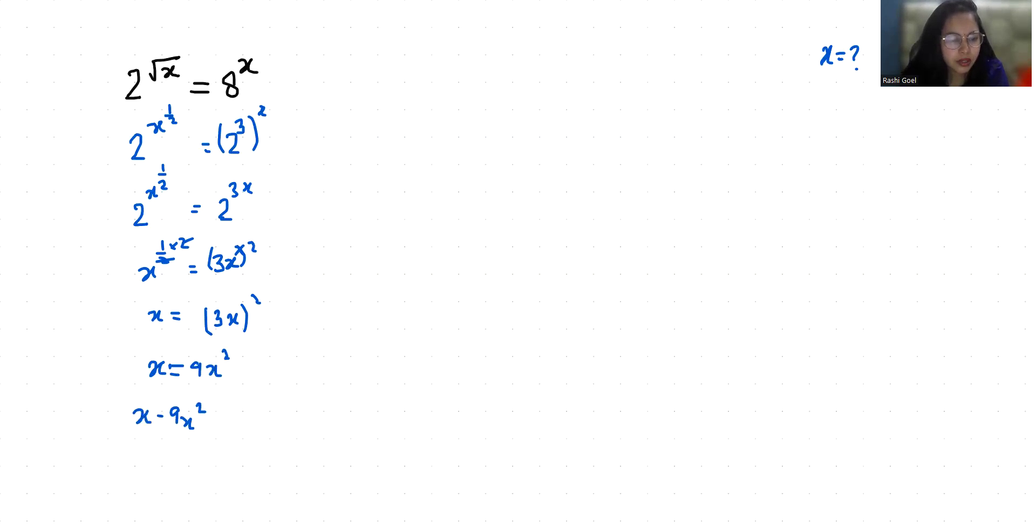If I take x as common, then 1 - 9x = 0. So first case, x = 0, and second case, 1 - 9x = 0. So -9x = -1, which gives x = 1/9.